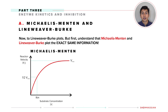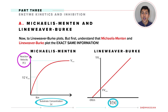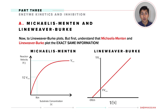We've learned how to draw Michaelis-Menten graphs, but now we need to translate these to a Lineweaver-Burk plot. This conversion is relatively simple — all we do is take the reciprocal of each term. On the x-axis, we replace substrate concentration with 1 over substrate concentration, and do the same on the y-axis. The reason we use Lineweaver-Burk graphs is because they make visualizing Vmax and Km straightforward: 1 over Vmax is the y-intercept, while negative 1 over Km is the x-intercept.